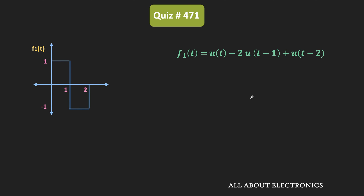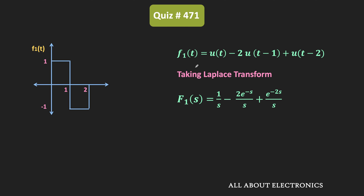So we can say that f1(t) = u(t) - 2u(t-1) + u(t-2). Now let us take the Laplace transform of this f1(t). The Laplace transform of the unit step function is 1/s, and using the time-shifting property, the Laplace transform of u(t-1) is e^(-s)/s, and the Laplace transform of u(t-2) is e^(-2s)/s.